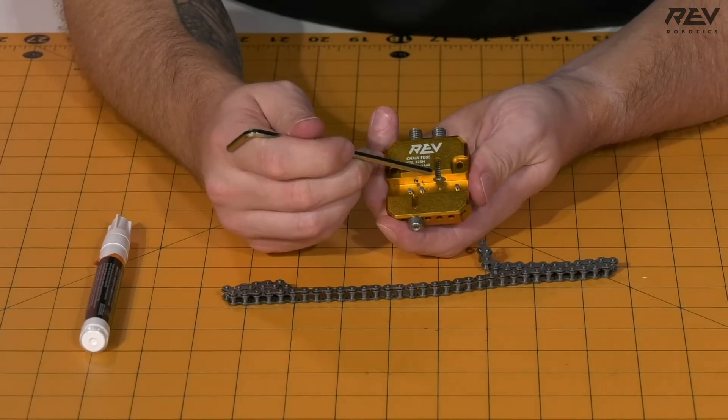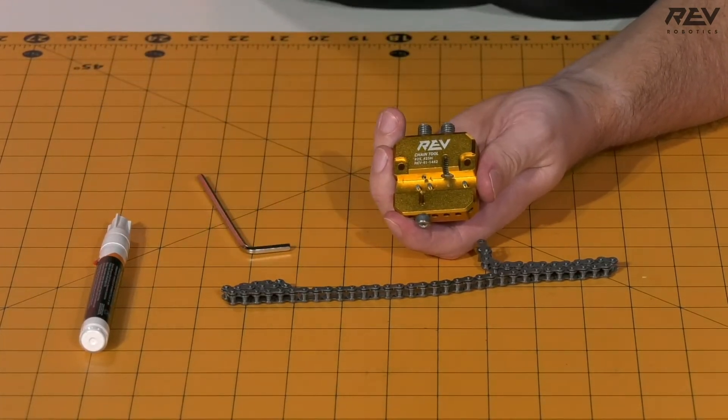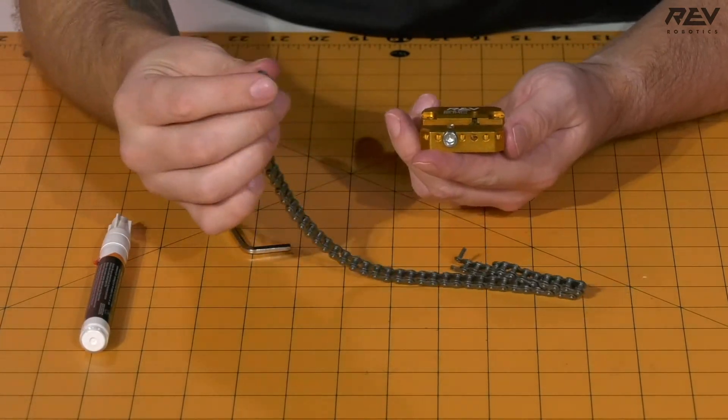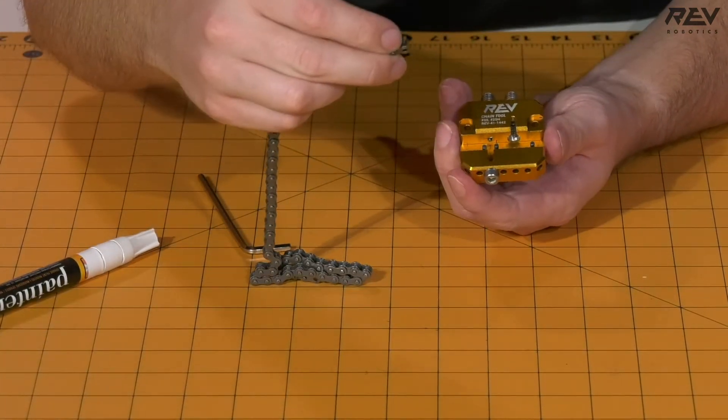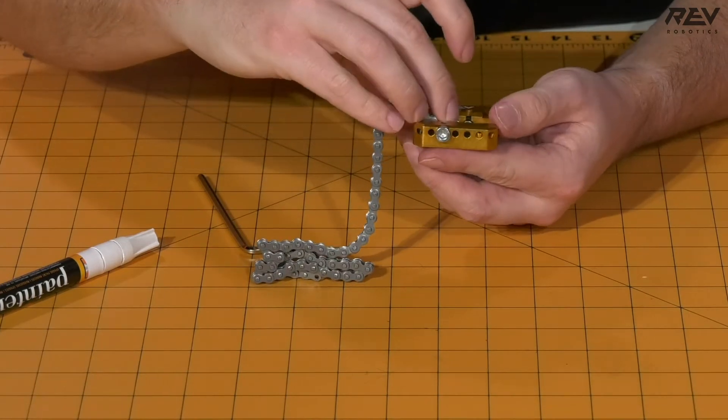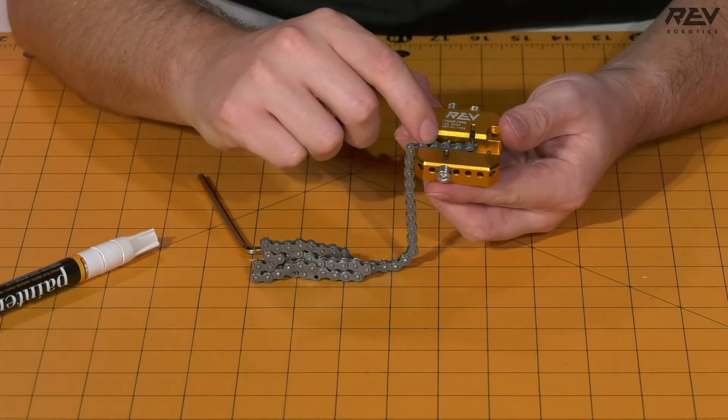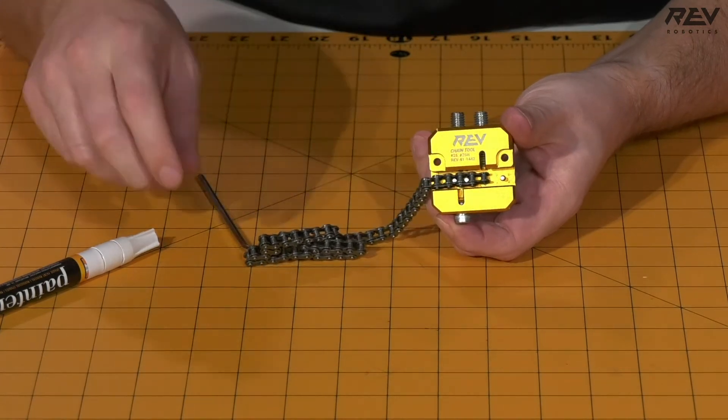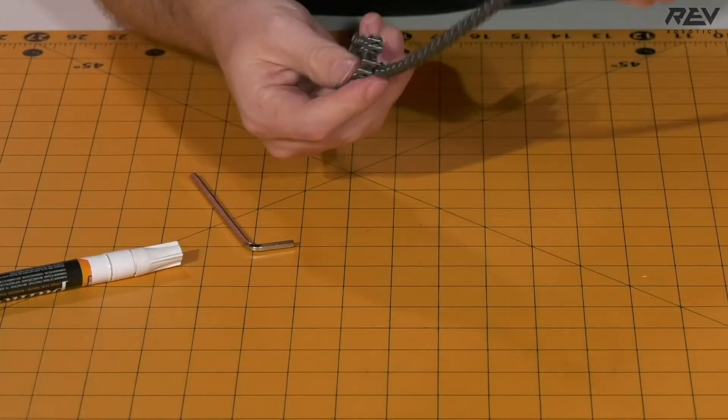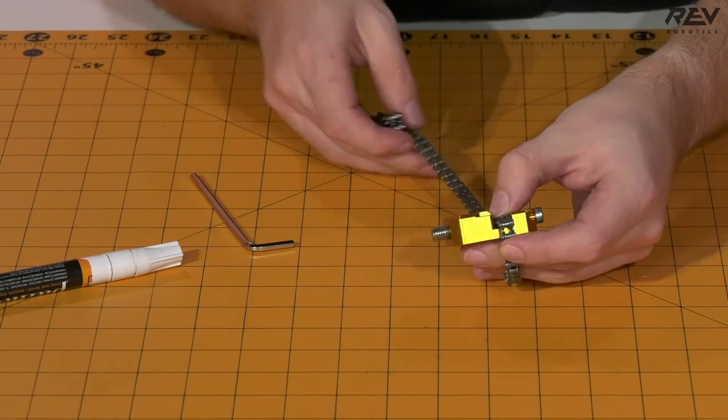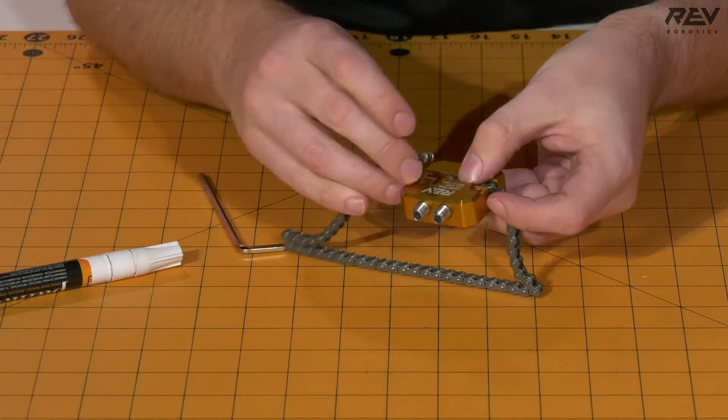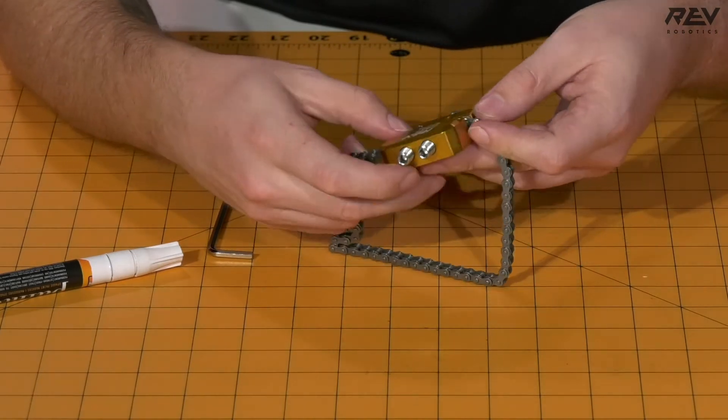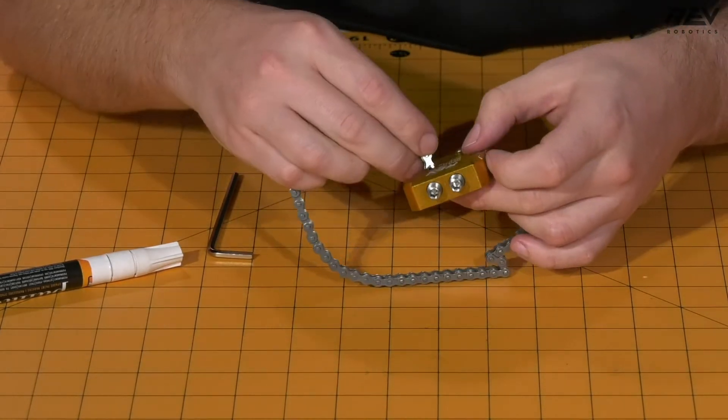So what we're going to want to do is we're going to want to start by taking the end that does not have the pin and aligning that in through these two pins that are built into the chain tool to hold it in place. And then you're going to take the rest of your chain and wrap that around to then place these inside of each other.